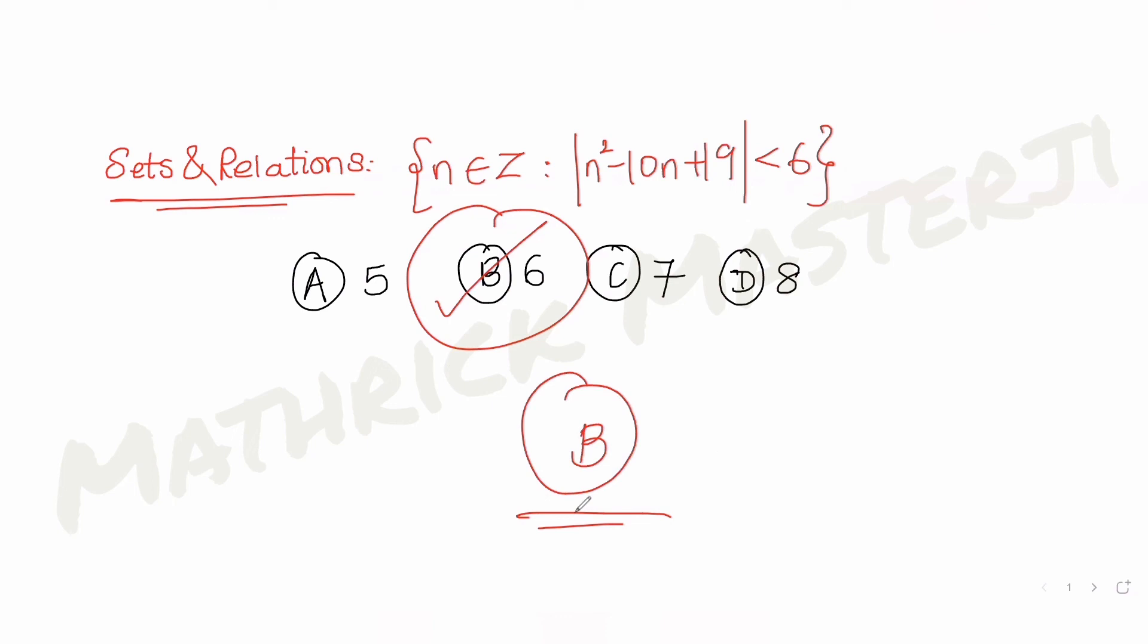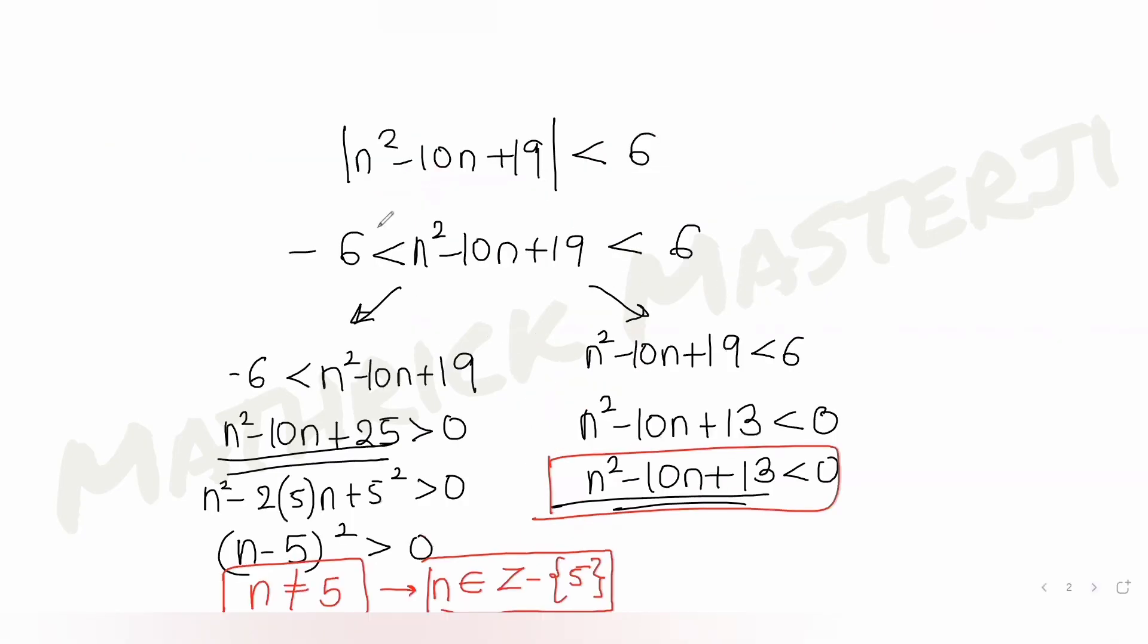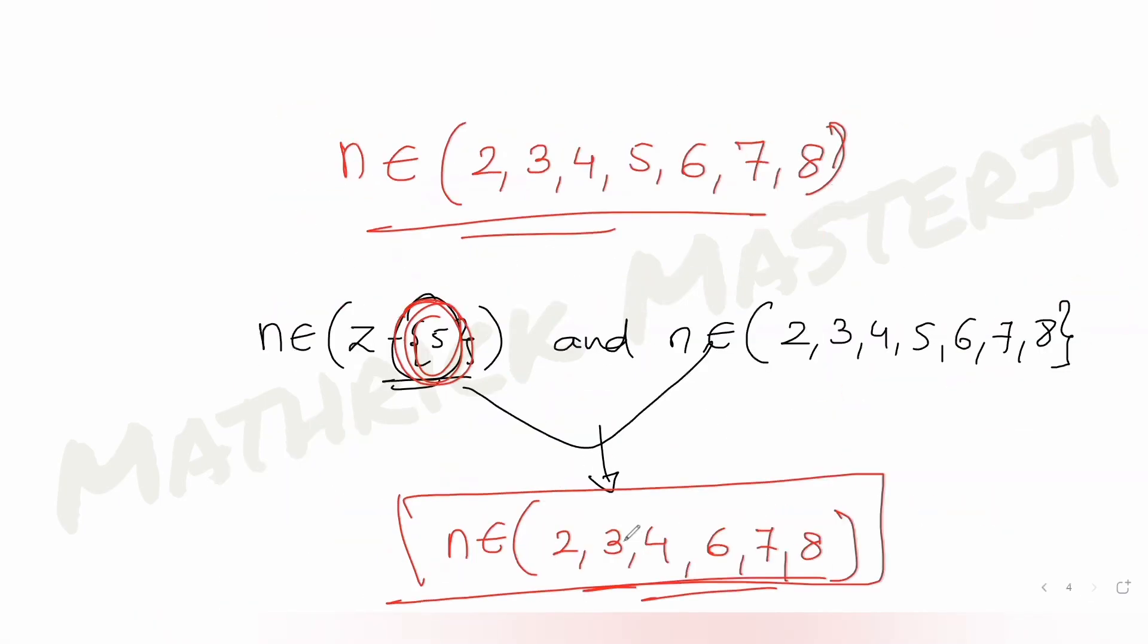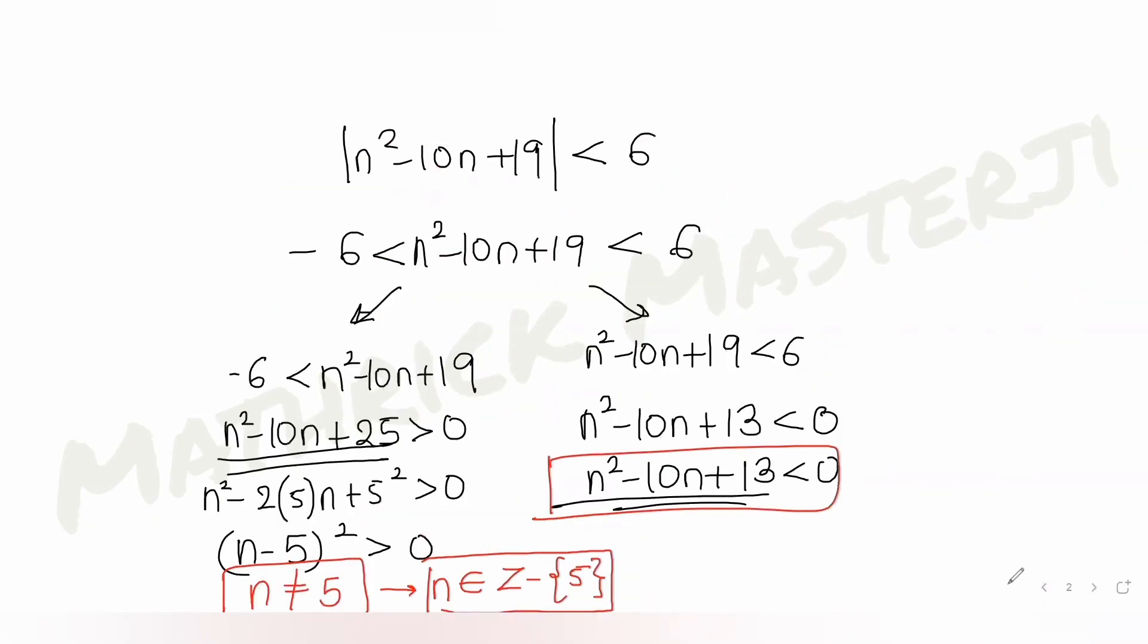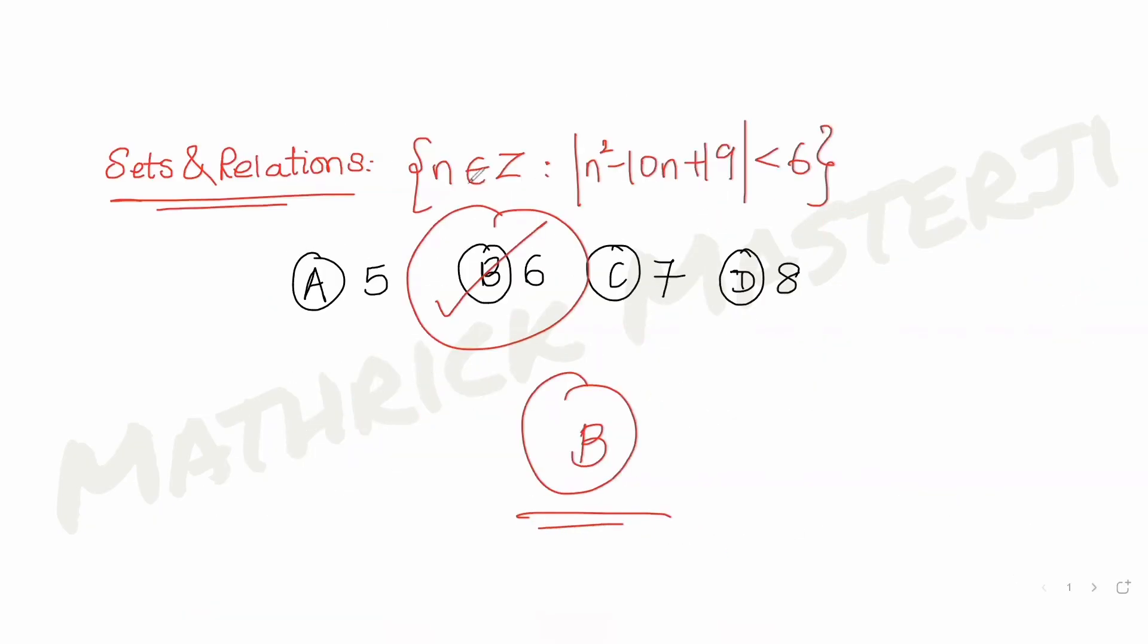I hope you have understood how to solve this type of question. I just divided by removing the mod. I got two parts. Once I solve for two parts, I got the values of n that satisfy the two parts. Once I combine those two parts, I got six elements in the set which will satisfy the conditions. Your answer becomes option B.